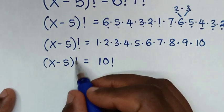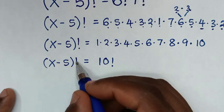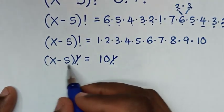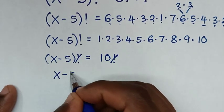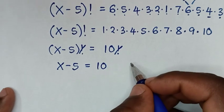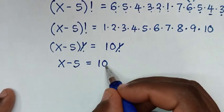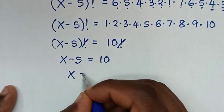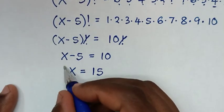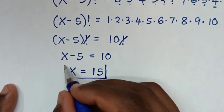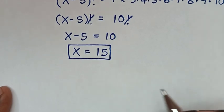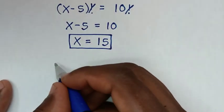So (x minus 5) factorial is equal to 1 times 2 times 3 up to times 10, which is 10 factorial. In the next step, since factorial appears on both sides, it drops out and we are left with x minus 5 is equal to 10. Taking negative 5 to the right side gives x is equal to 10 plus 5, which is 15.